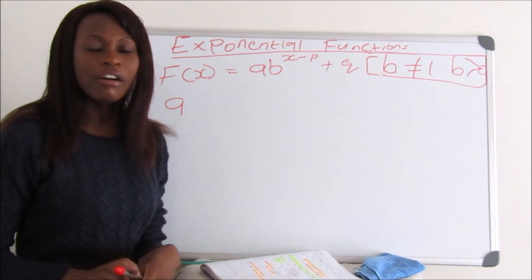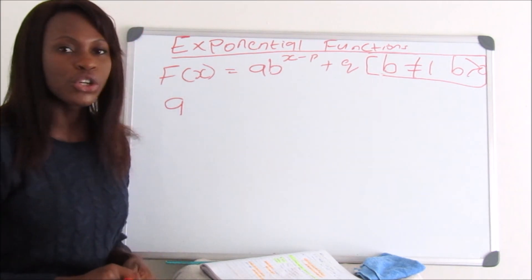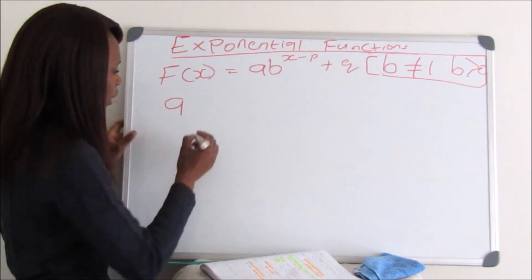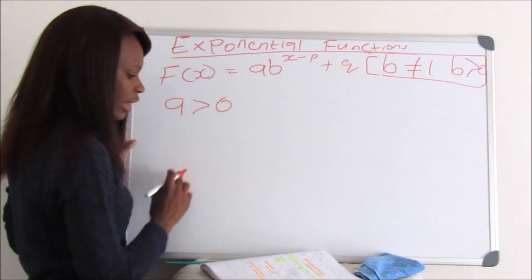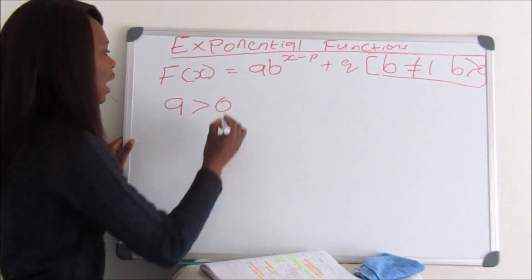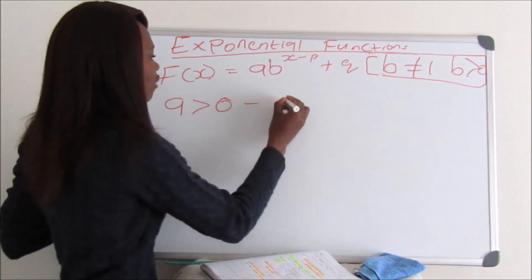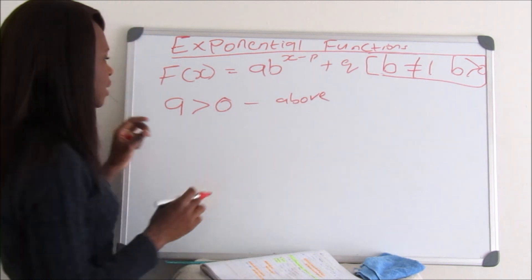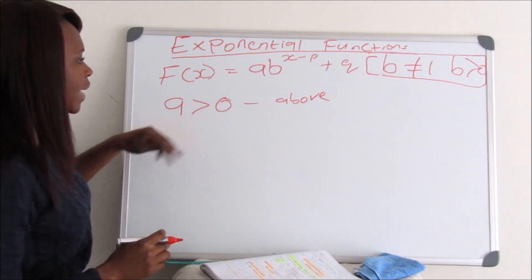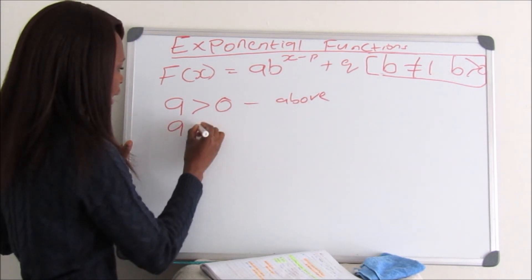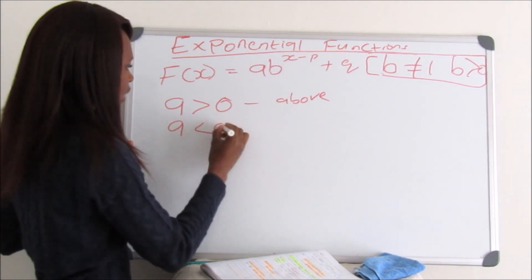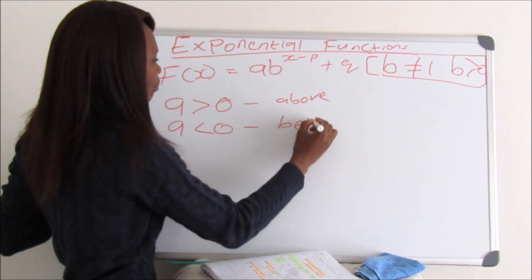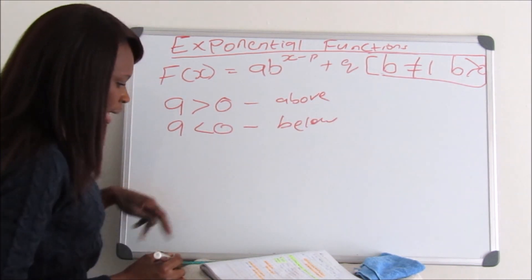A from this equation determines which side of the asymptote your graph will lie at. For example, if A is greater than 0, then the graph will lie above the asymptote. If your A is less than 0, then your graph will lie below the asymptote.